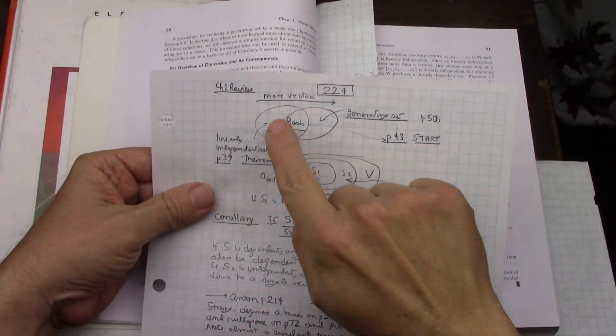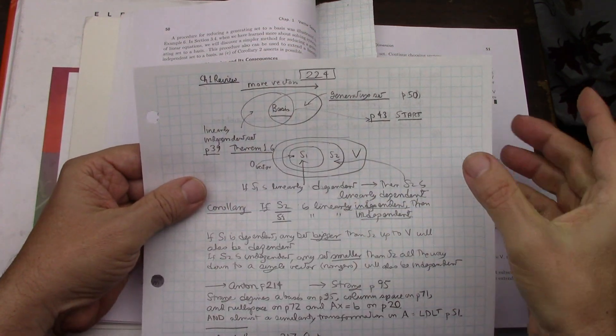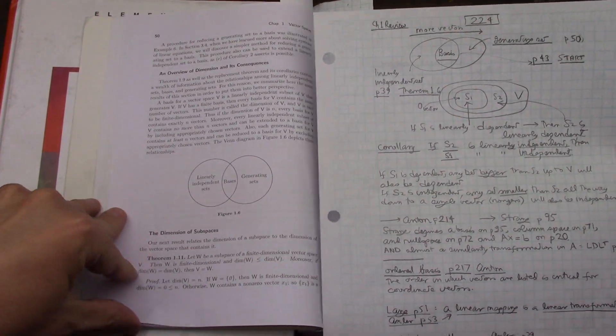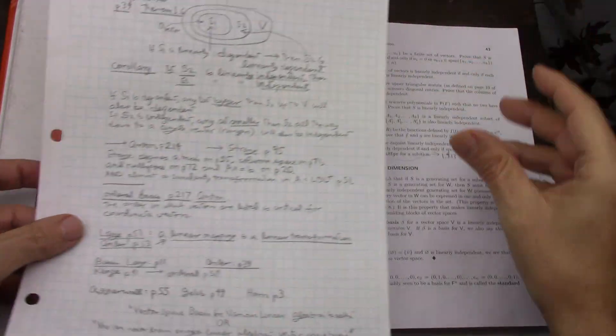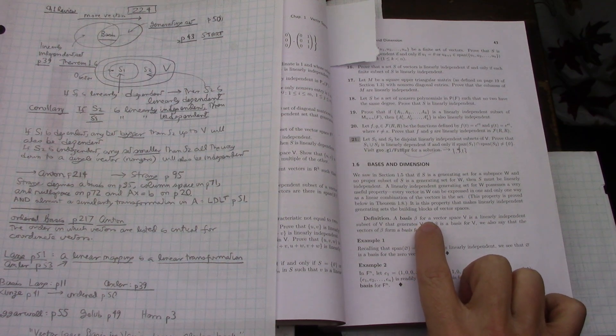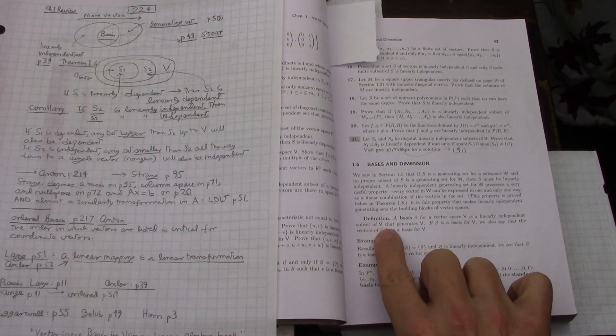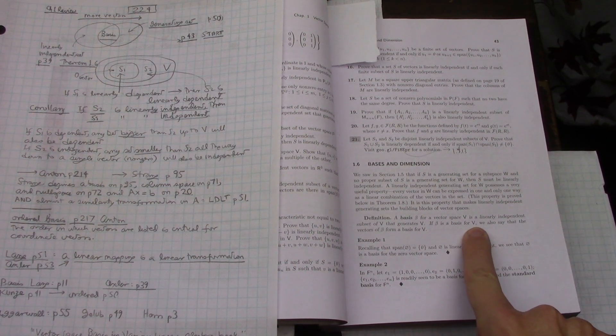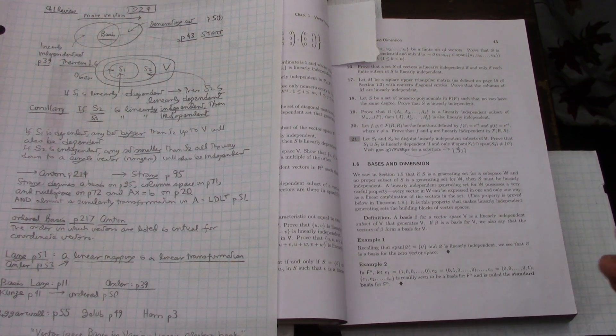If you look at this diagram with an arrow that says 'more vectors that way,' I'm going to start with page 43 of this book. How does FIS define a basis? A basis beta for a vector space V is a linearly independent subset of V that generates V. If beta is a basis for V, we may also say that the vectors of beta form a basis for V.